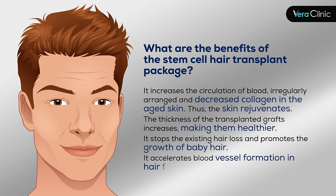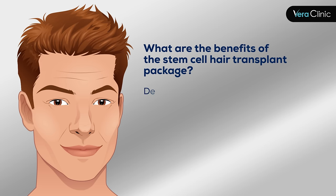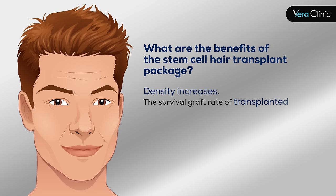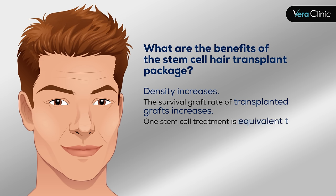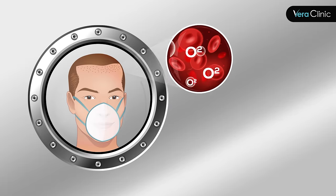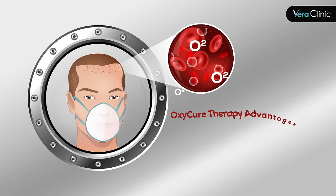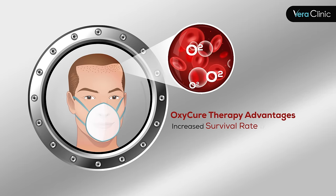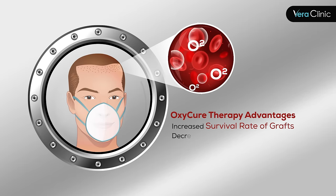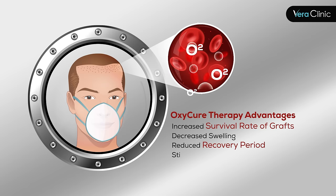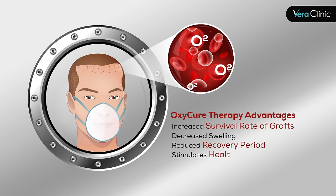It accelerates blood vessel formation in hair follicles, increases density, and raises the survival rate of transplanted grafts. One stem cell treatment is equivalent to 7 PRP treatments. OxyCure therapy advantages include: increased survival rate of grafts, decreased swelling, reduced recovery period, and stimulation of healthy hair growth.